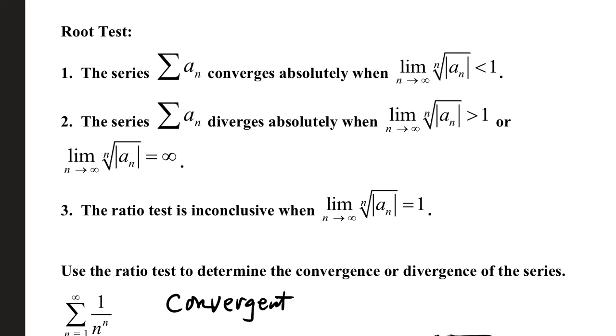Those punch lines were the same with ratio test, but instead of absolute value of a sub n plus 1 over a sub n, we take the nth root of our a sub n term. Let's jump to some examples.